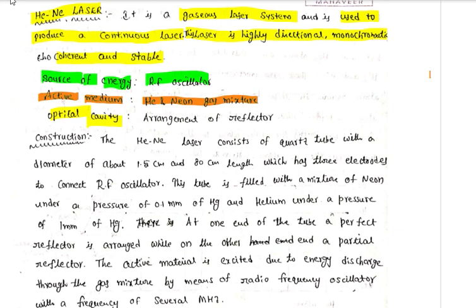The optical cavity produces the output radiation. Both sides have reflectors arranged: one end has a perfect reflector and the other end has a partial reflector. This is the basic construction.